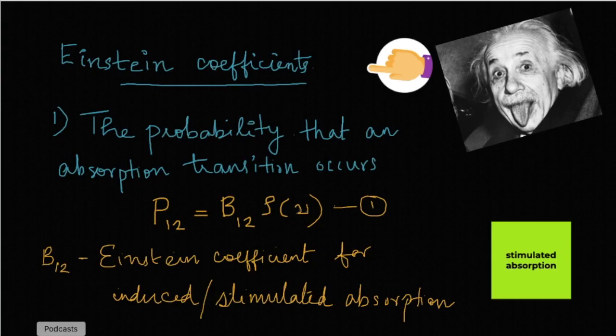Having learned about the interaction of light with matter, let's now summarize the Einstein coefficients, which are the proportionality constants introduced in those discussions.